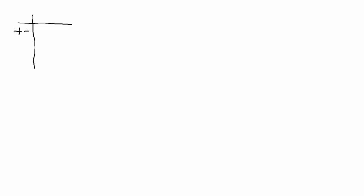That's adding and subtracting numbers which have negatives. Now the next one is multiplying and dividing. The table says: two positives make a positive; a plus and a negative give you a negative; a negative and a plus give you a negative; and two negatives give you a plus.